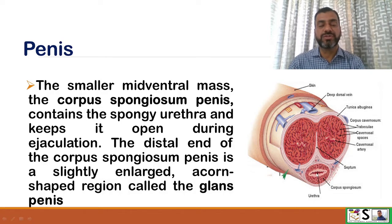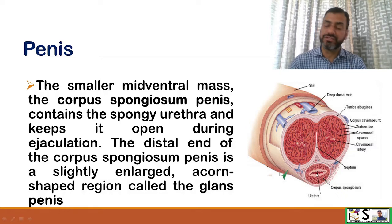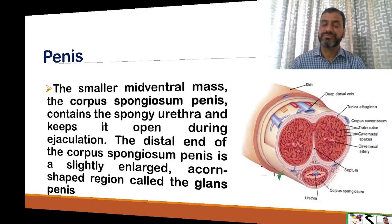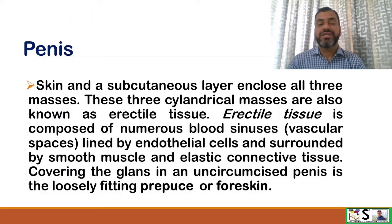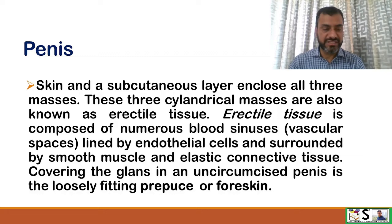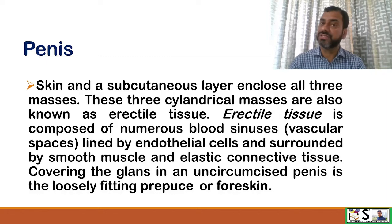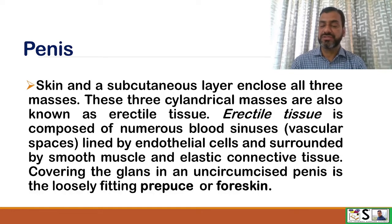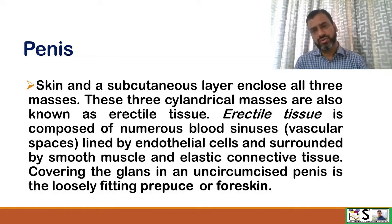The distal end of the corpus spongiosum is slightly enlarged, acorn-shaped, and is called the glans penis. Skin and subcutaneous layer enclose all three masses. These three cylindrical masses are also known as erectile tissue, which is composed of numerous blood sinuses lined by endothelial cells and surrounded by smooth muscle and elastic connective tissue. Covering the glans in an uncircumcised penis is the loosely fitted prepuce or foreskin.